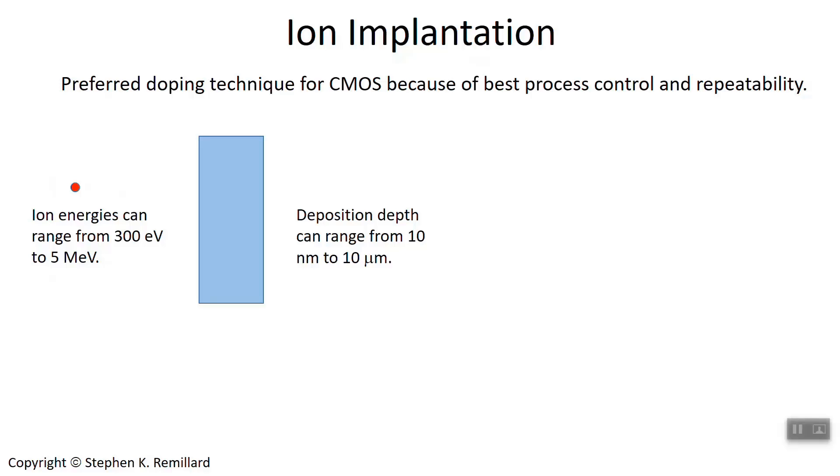I'll talk a little bit about that damage that can happen and how it's repaired, but something to keep in mind is that the energy is kept low to control the damage and to implant at a low depth. For example, deposition ranges can range from 10 nanometers to 10 microns, and this is the ion beam range that typically enables that kind of depth.